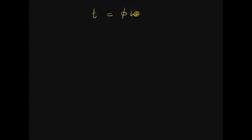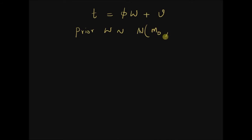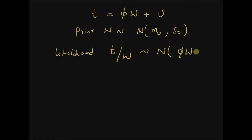Given the linear model t equal to φ times w plus some noise v — that is, we have a measurement or target value t, a hidden variable w, and noise v. We are given the prior of w as a normal distribution with mean m₀ and variance S₀, and the likelihood function t given w follows a normal distribution with mean φw and variance σ, where σ is the covariance of the noise vector v.